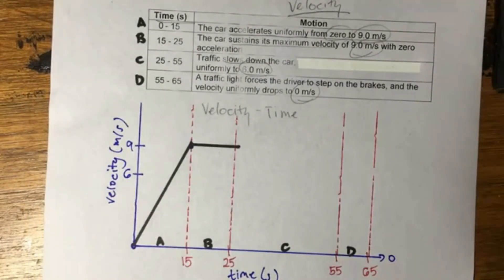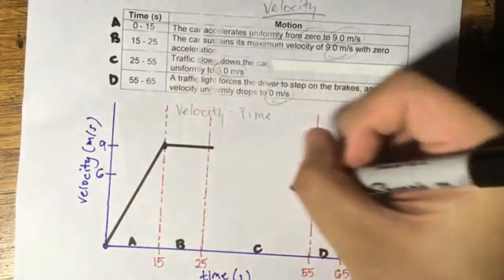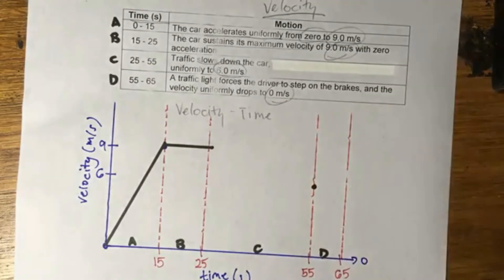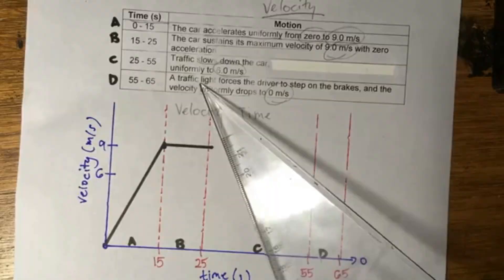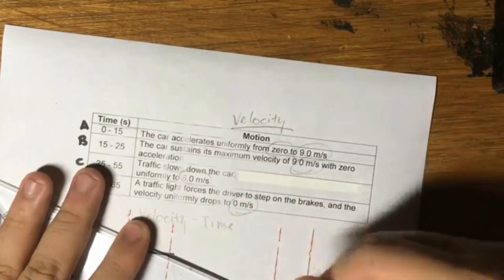And then I'm going to plot a point at the end of segment C that corresponds to 6 meters per second. And because it slows down uniformly, it's just going to be a straight line going from here to there.